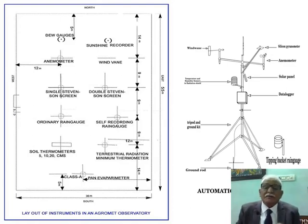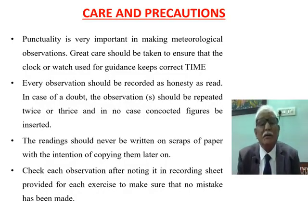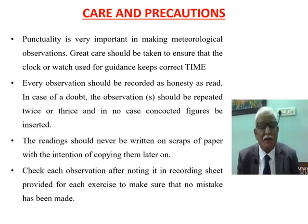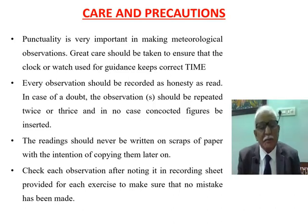All these instruments must be carefully maintained to provide correct information on weather elements. What are the care and precautions one should take? Functionality is very important in making meteorological observations. Care should be taken to ensure that the clock or watch keeps correct time, and every observation should be recorded honestly and accurately. In case of doubt, observations should be repeated twice or thrice.